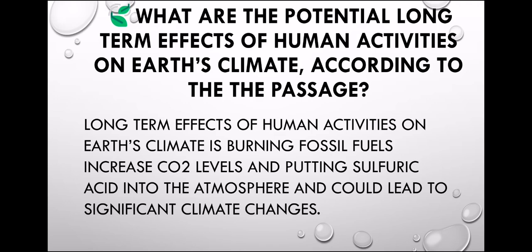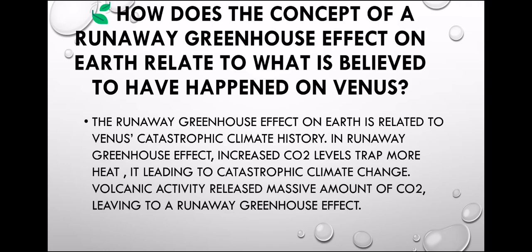How does the concept of a runaway greenhouse effect on Earth relate to what is believed to have happened on Venus? The runaway greenhouse effect on Earth is related to Venus's catastrophic climate history — increased CO2 levels trapped more heat, leading to catastrophic climate change, as volcanic activity released massive amounts of carbon dioxide causing a runaway greenhouse effect.